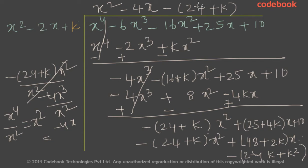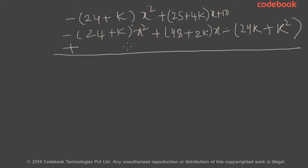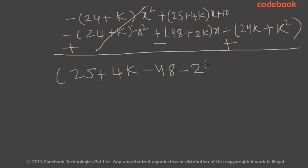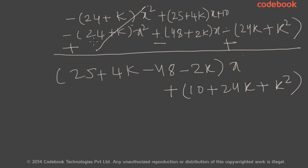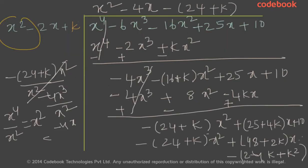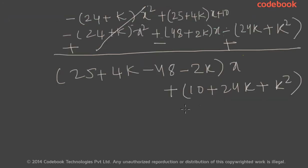Multiplying k by 24 gives 24k, and k by k gives k squared; minus times plus is minus. Doing the subtraction and changing signs, the x squared terms cancel. For the x terms you have 25 plus 4k minus 48 minus 2k, and the constant term is 10 plus 24k plus k squared. The degree of the remainder is 1 and the degree of the divisor is 2, so the degree of the remainder is less than the degree of the divisor — stop the division process.